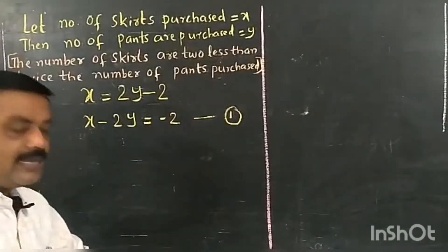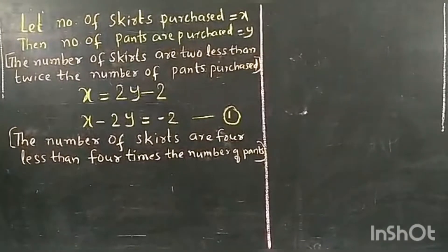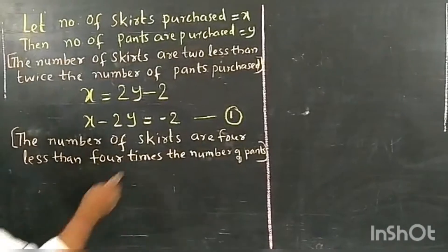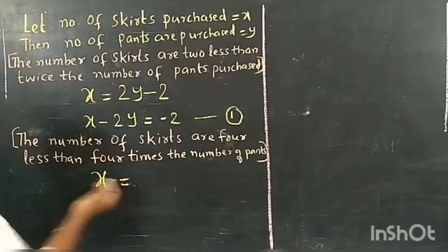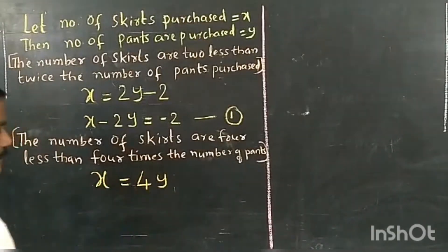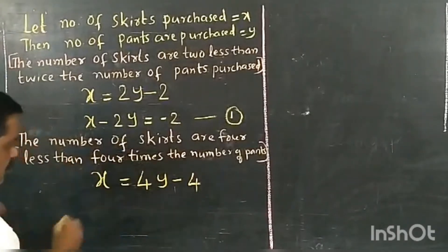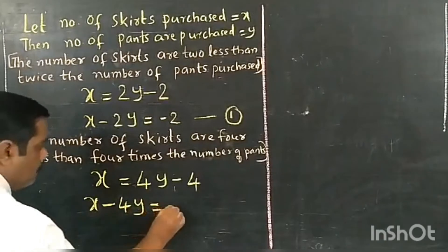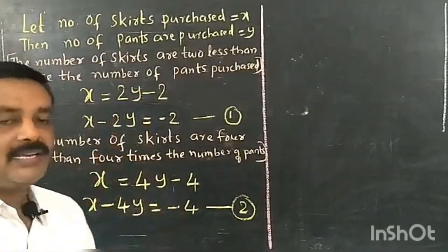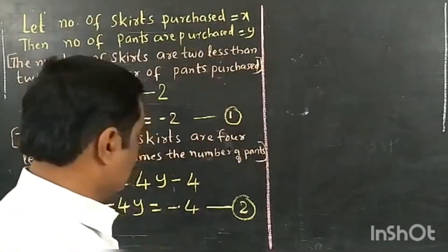The next condition given in the question is: the number of skirts are four less than four times the number of pants. So the number of skirts X equals 4Y minus 4. Shifting four to the left side, we get X minus 4Y equals minus 4. This is the second equation. The verbal situation has now been converted into a pair of linear equations in two variables.